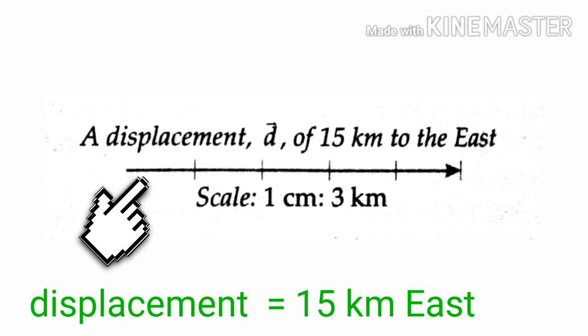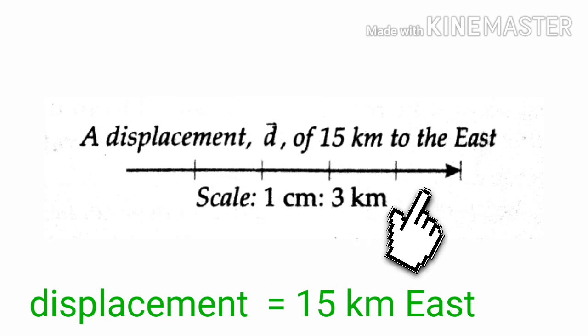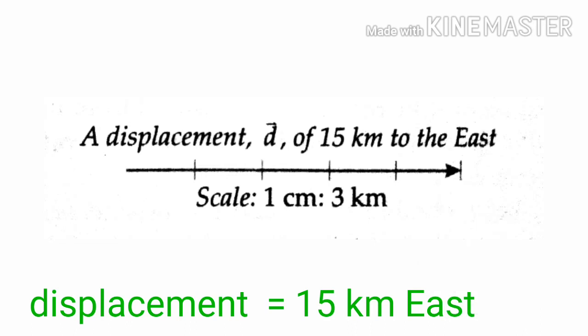This scale, where each centimeter on the line is equivalent to 3 kilometers, gives us an idea that the magnitude of displacement is actually 15 kilometers, not 5 centimeters. Finally, the arrowhead is added to the scaled line to indicate the direction of the vector.